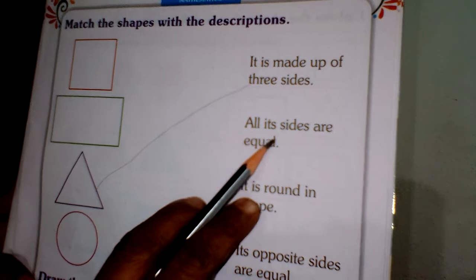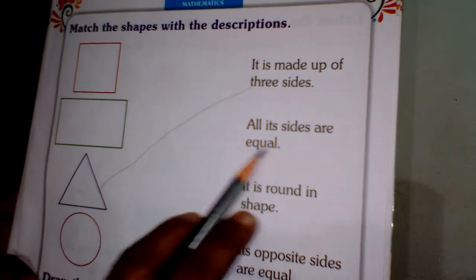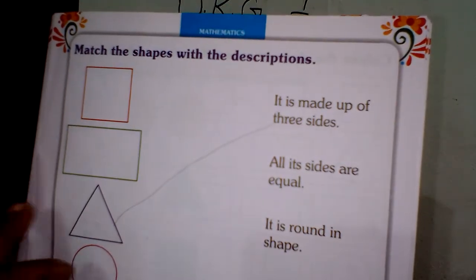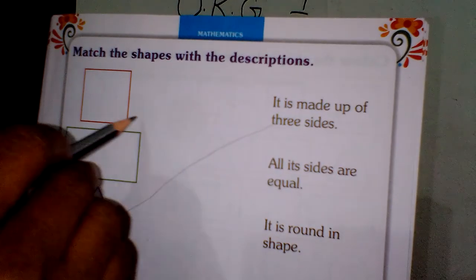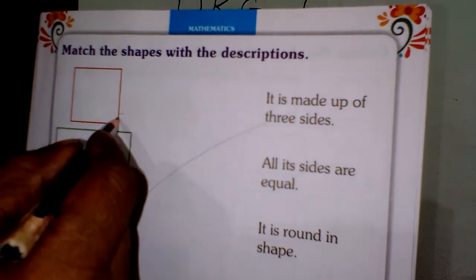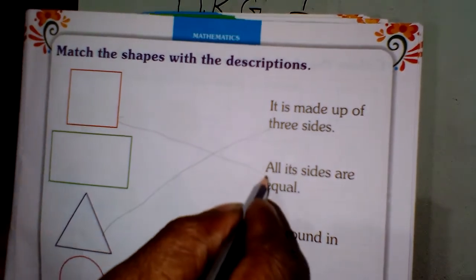Next, all its sides are equal. This is the square. Please draw the line.